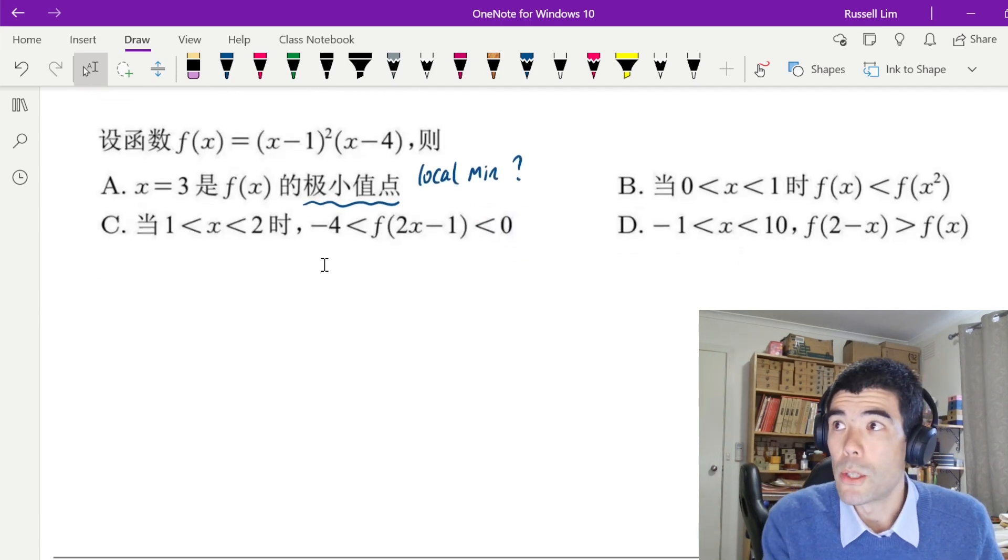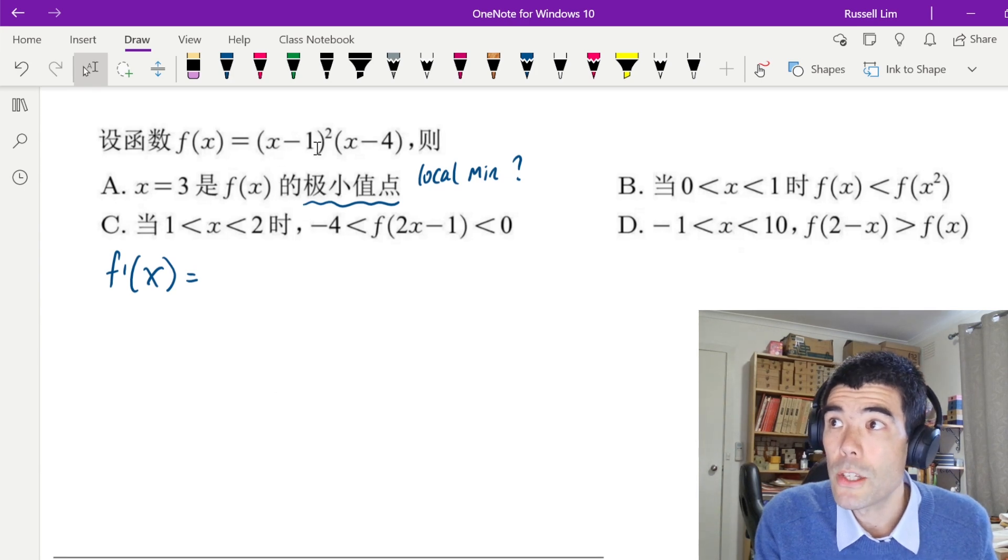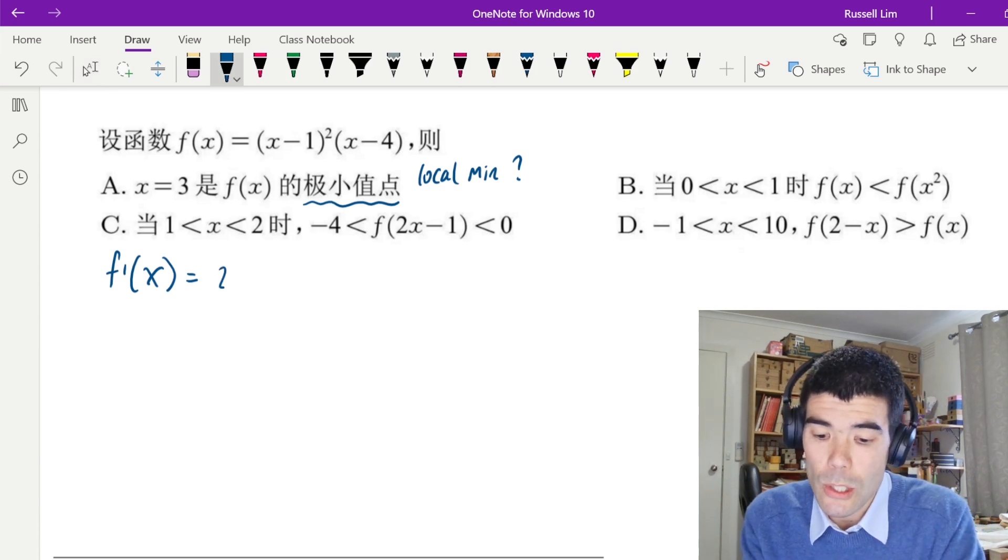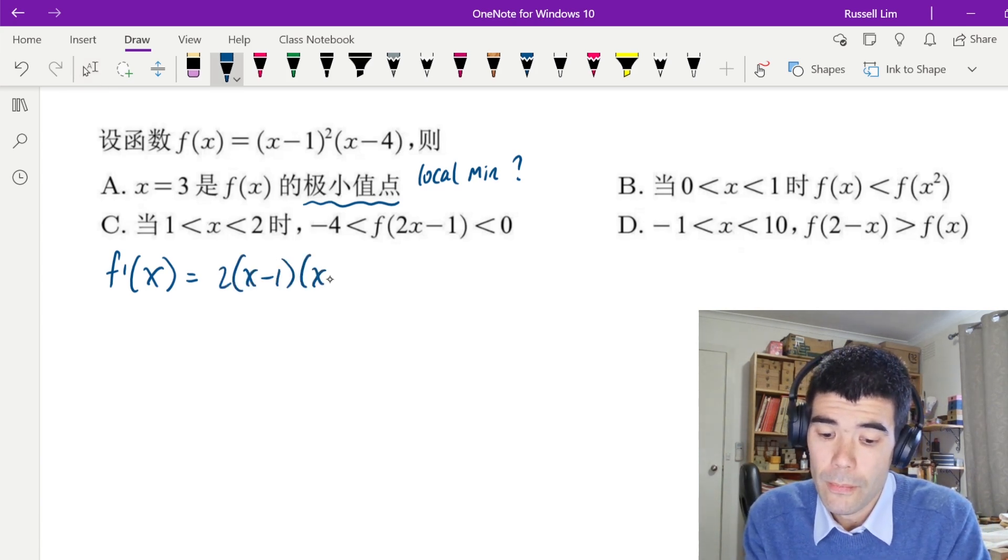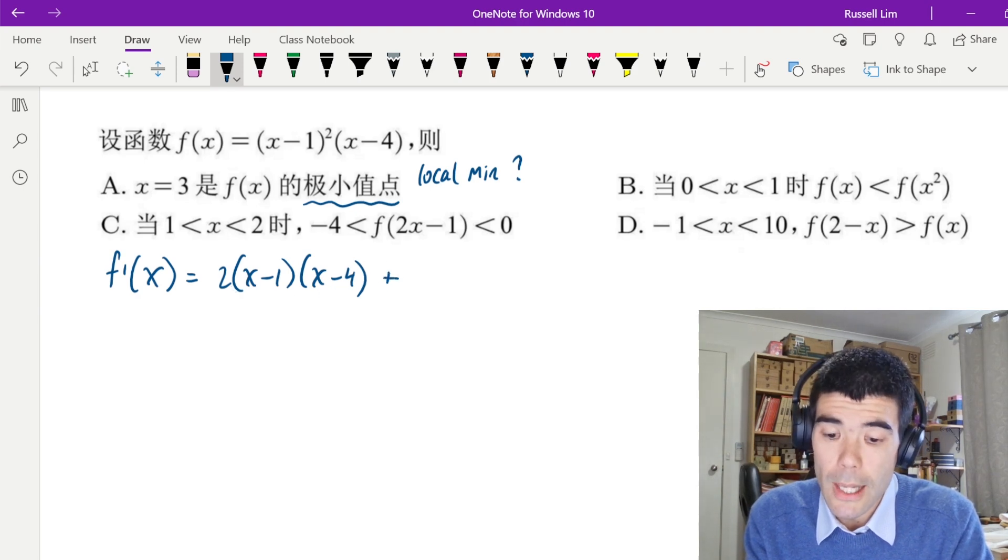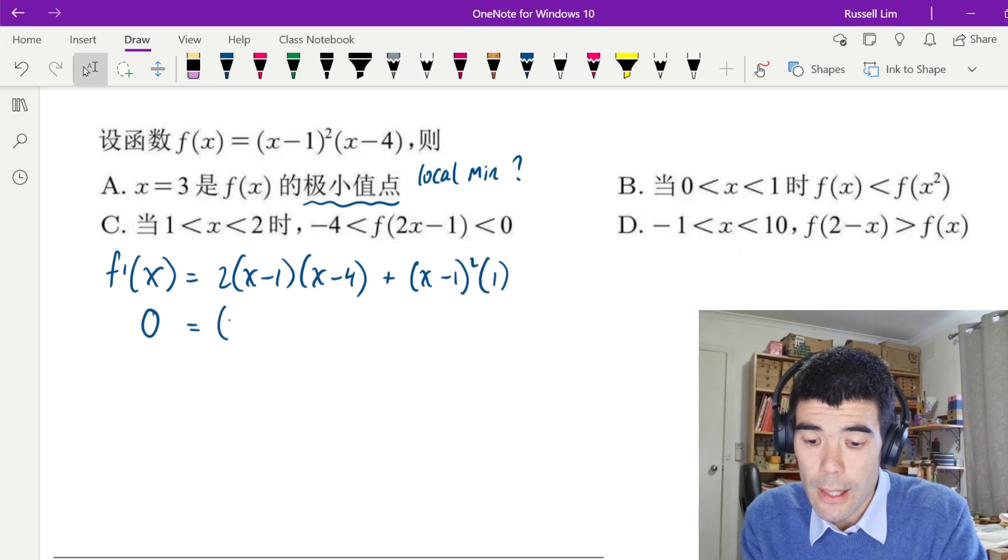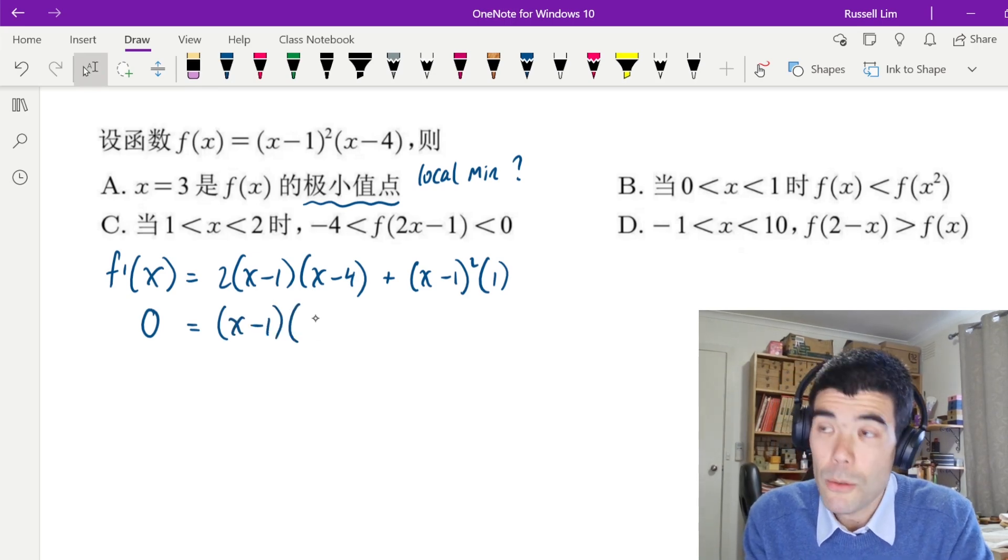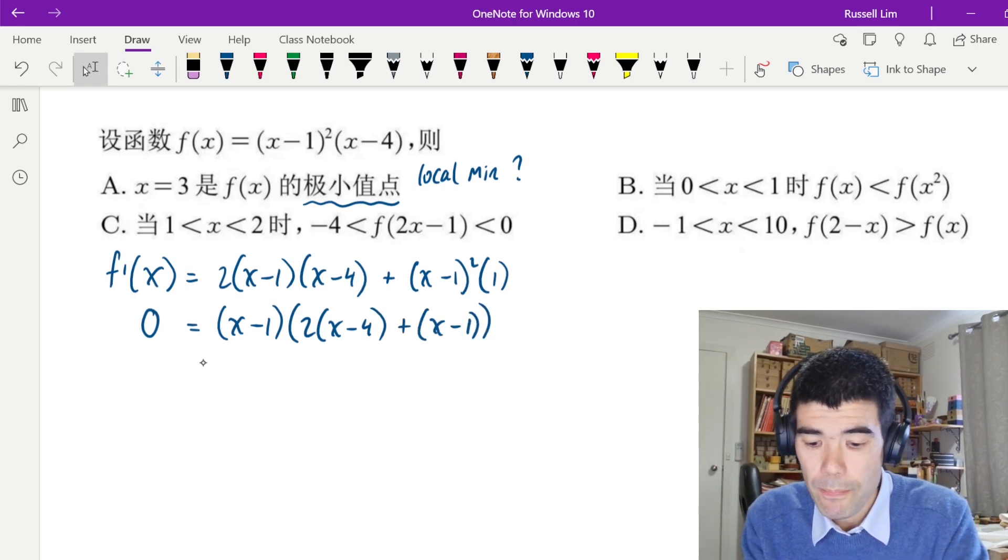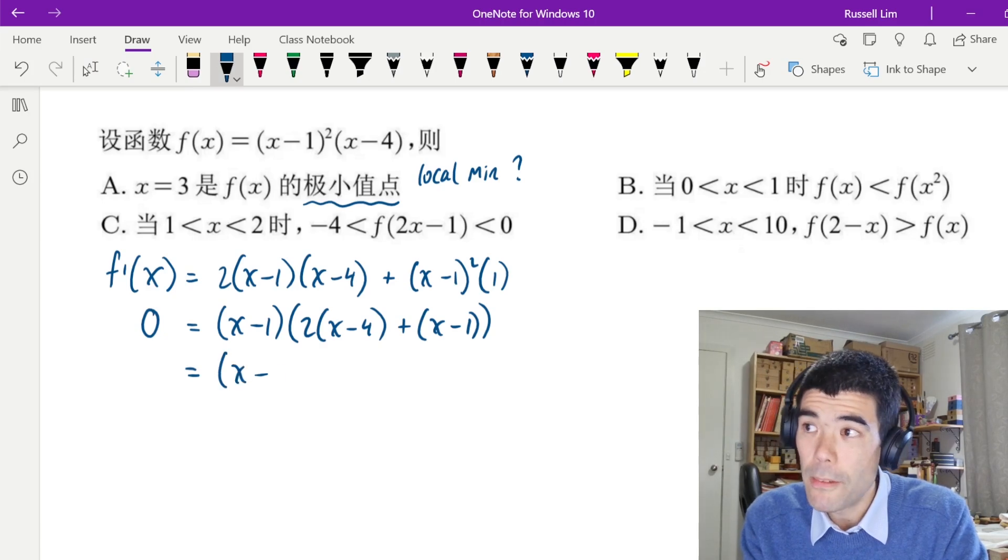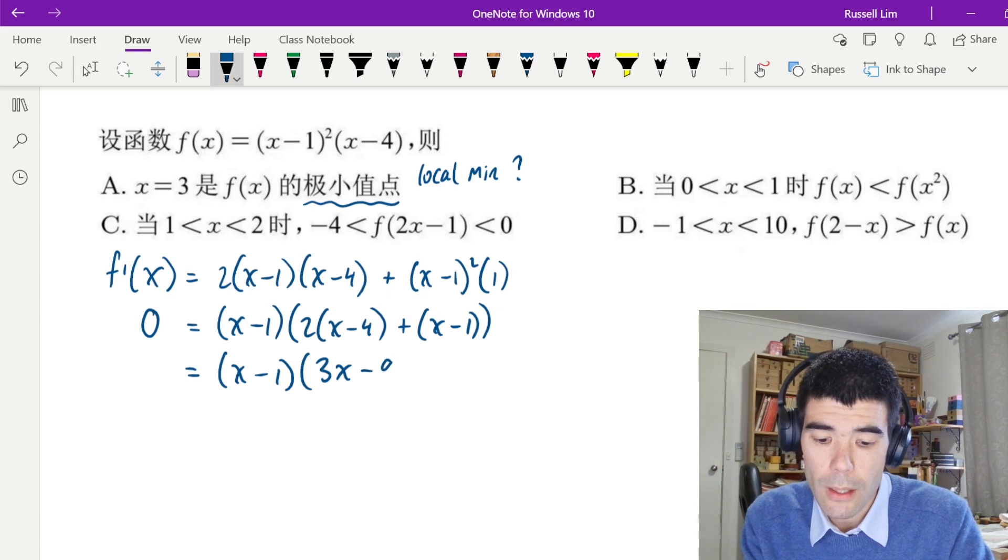So in order to do that, probably do a derivative, and we can do that probably using the product rule to differentiate. So using this first function as u, second function as v, du/dx will be 2x - 1. So du/dx times v plus u times dv/dx. dv/dx is just going to be 1. Alright, so we're going to set that equal to 0, and we can probably factor out the (x - 1). And we'll be left with 2x - 4 plus x - 1. And if we simplify that second bracket, we'll get 2x plus x, 3x minus 8 minus 1 minus 9.